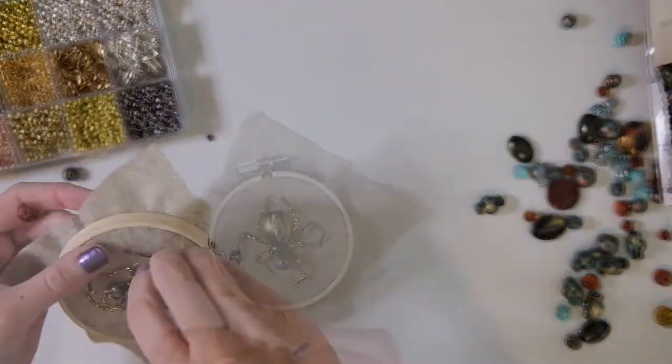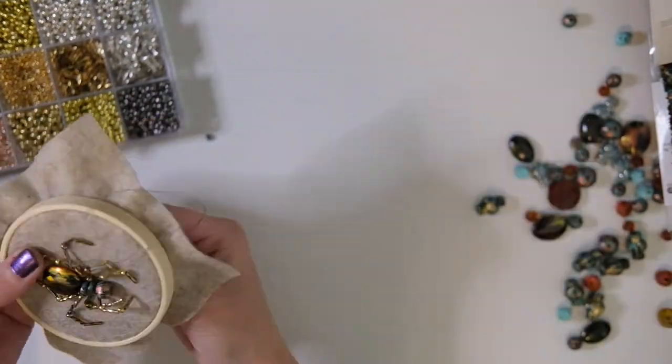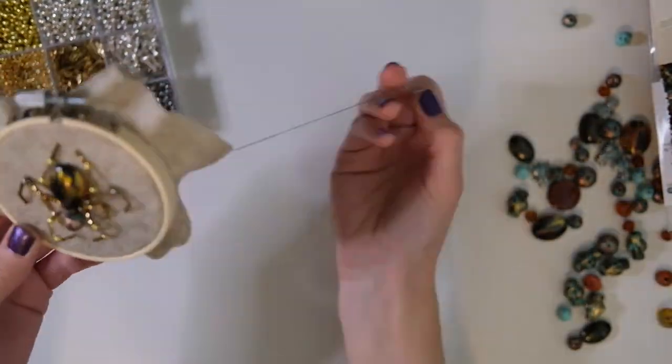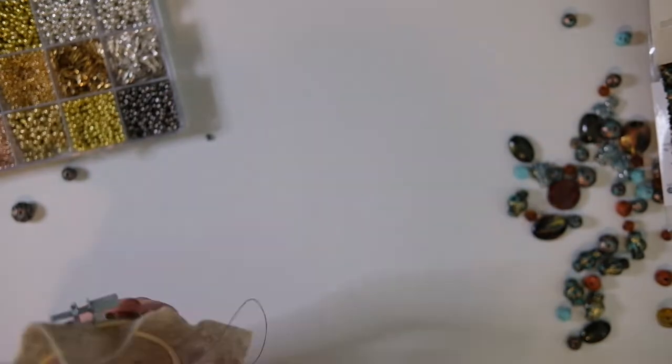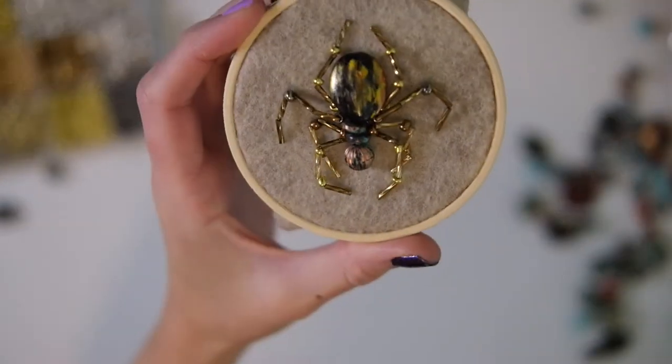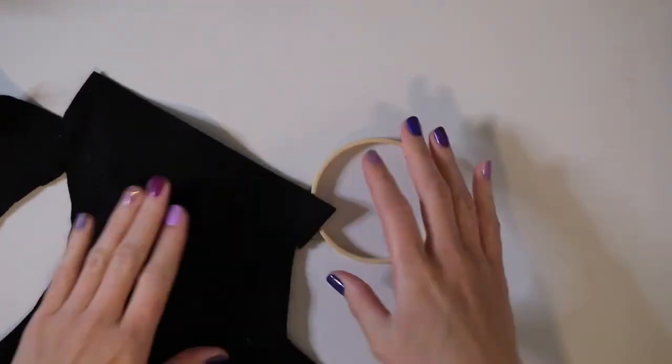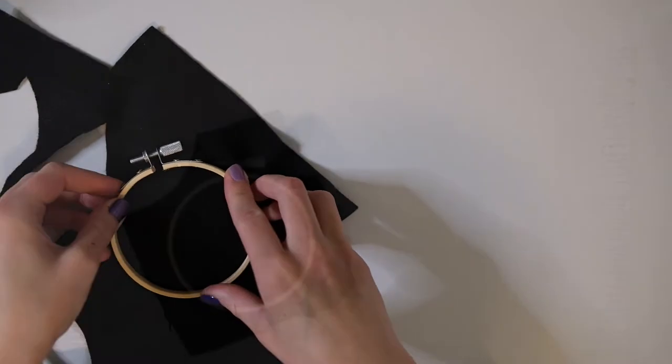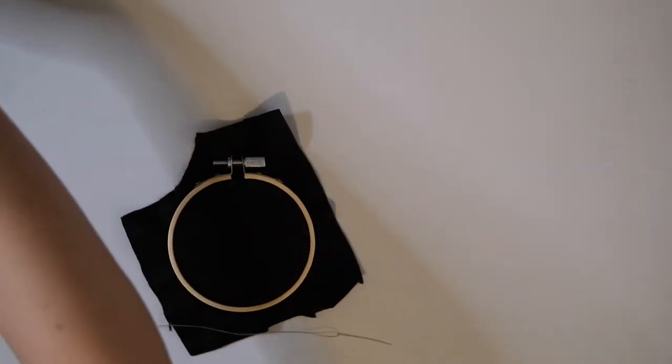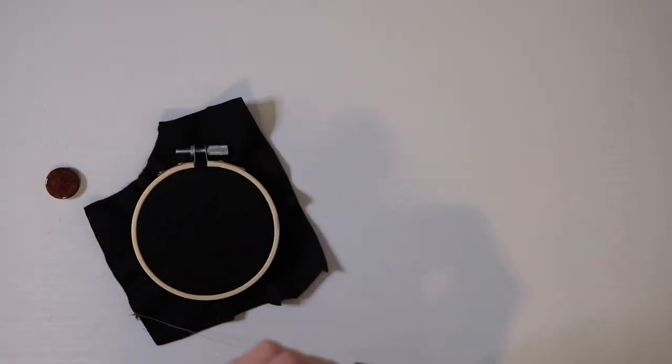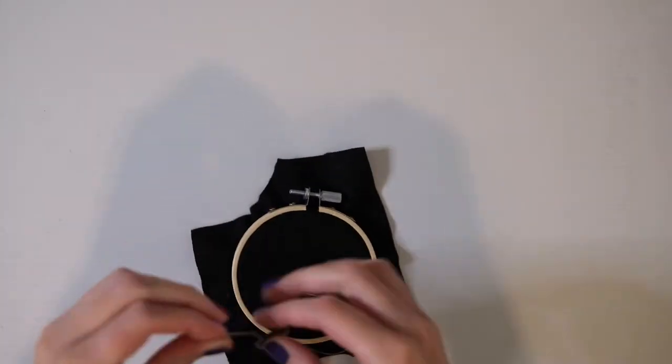Moving on to the next design, for this one I'm going to be using black felt as the background. I didn't even know I had this round orange bead until I went to make this. I knew I was going to make a pumpkin, so I was just sifting through the beads that I had and found this one.